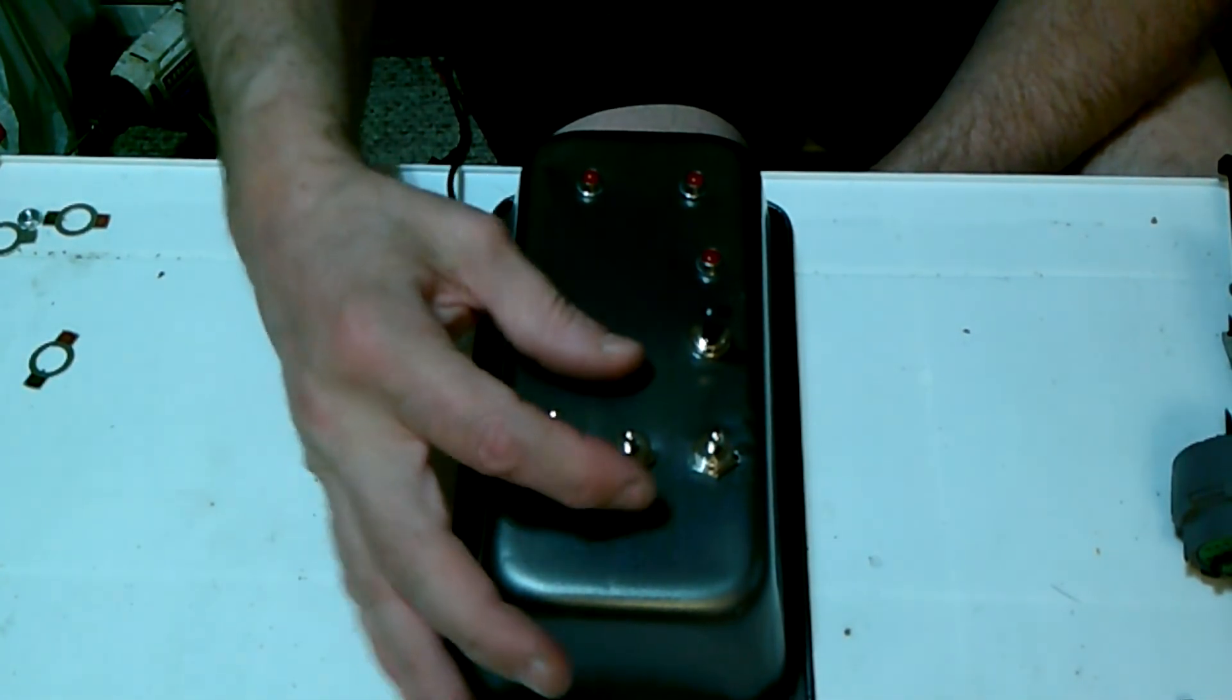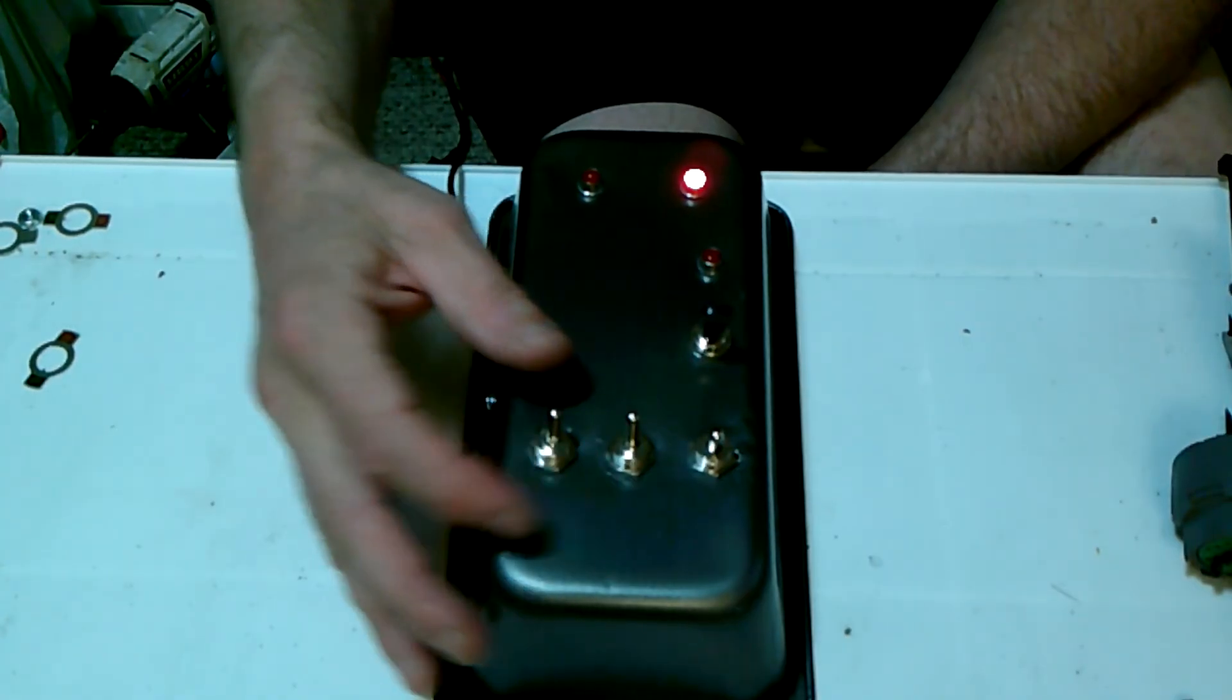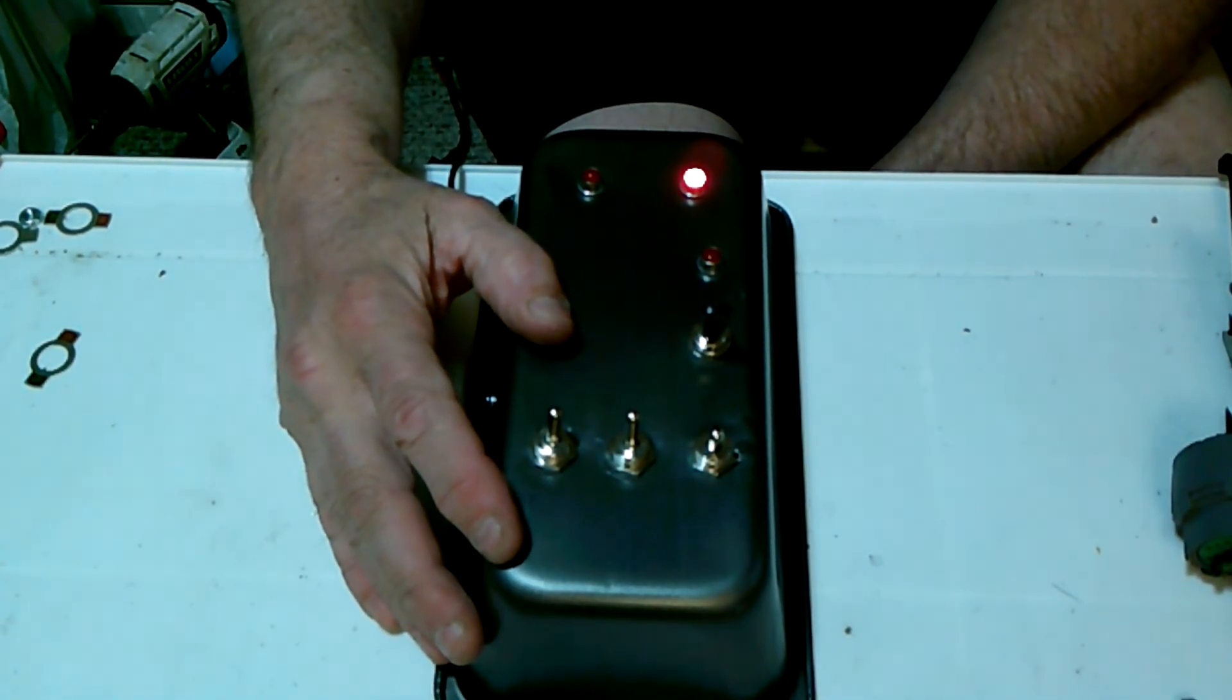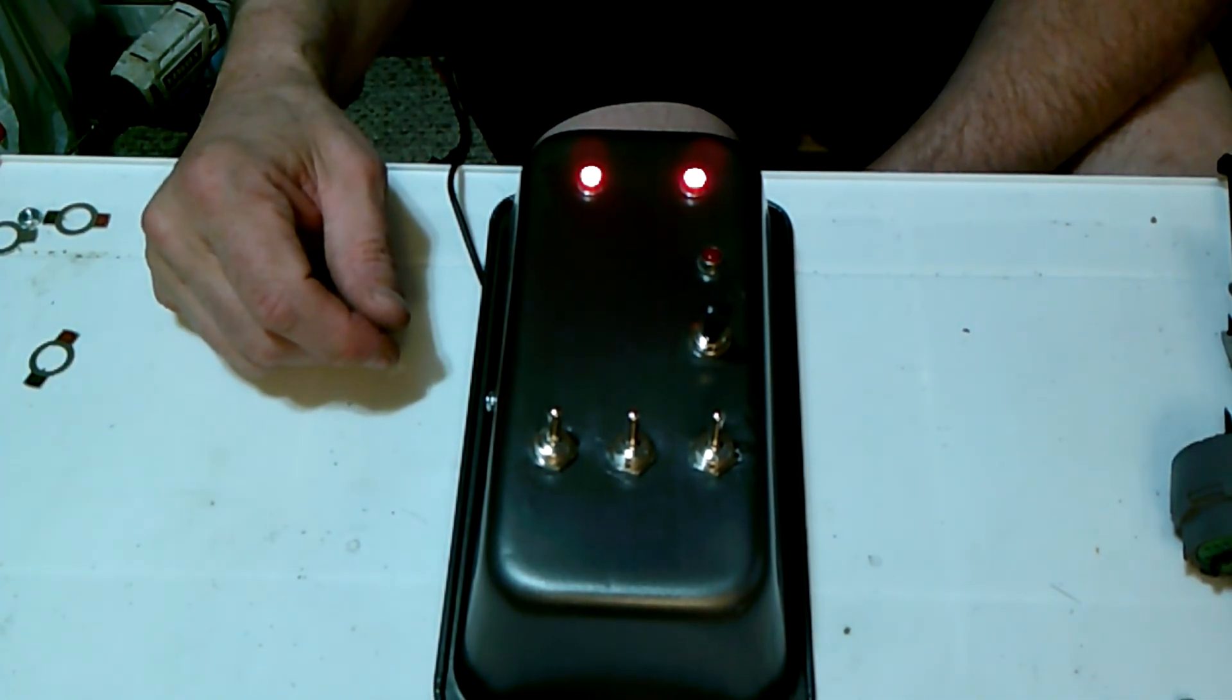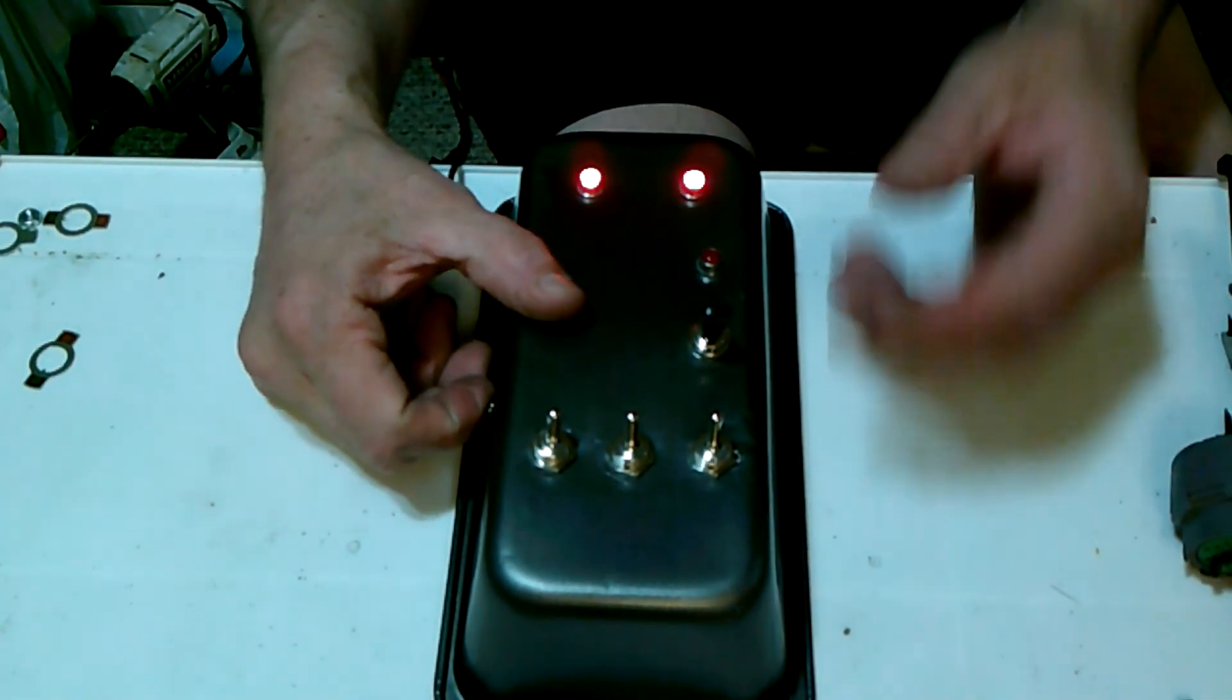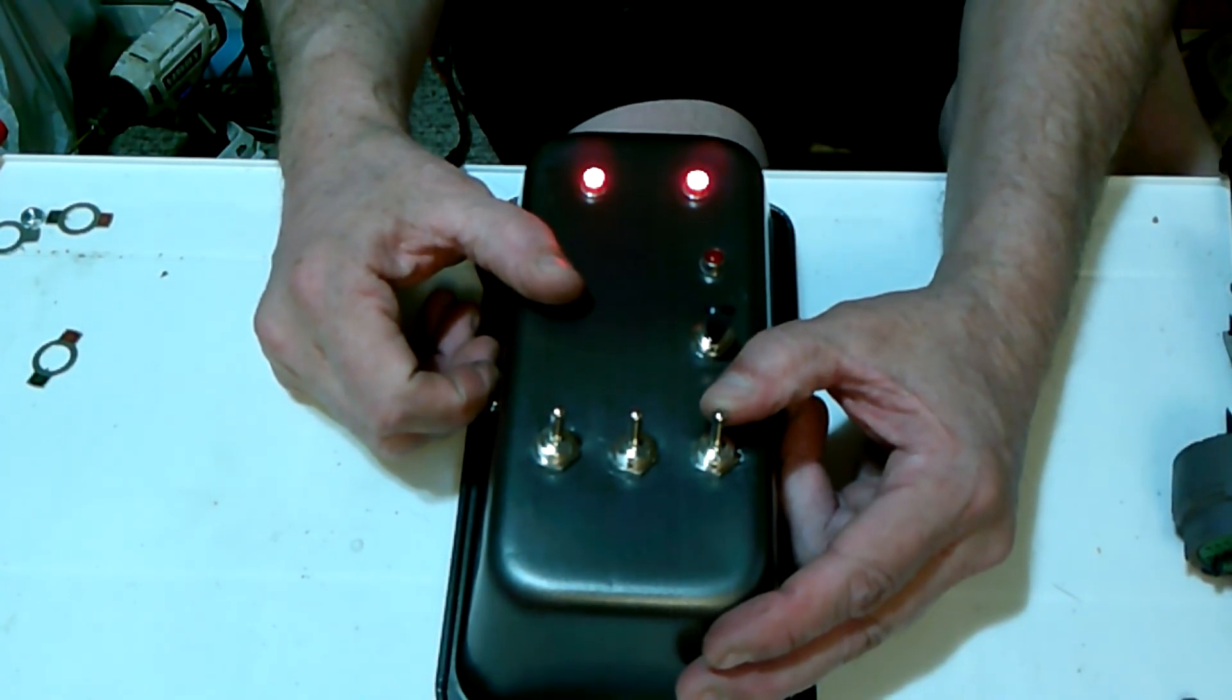Third gear is solenoid B on, solenoid A off. Fourth gear is both solenoids on. And there we are. And shifting down, just reverse it.